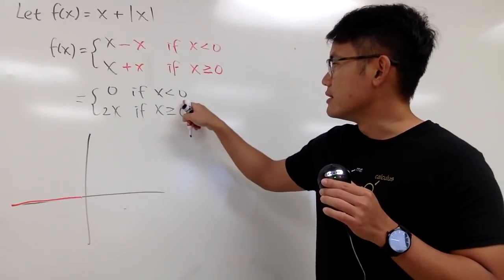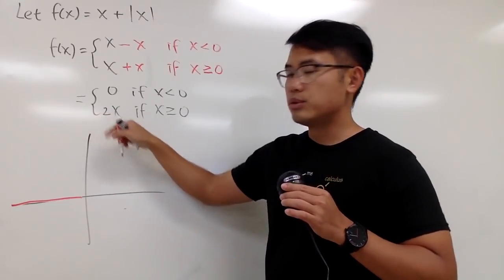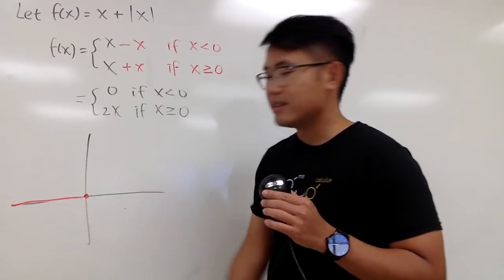And when x is at exactly 0, you know this is 0, and if you plug in 0 here, 2 times 0 is 0. When x is 0, the y value is also 0 like this.